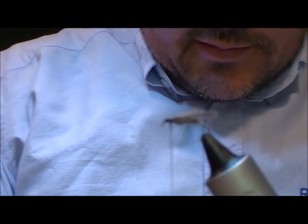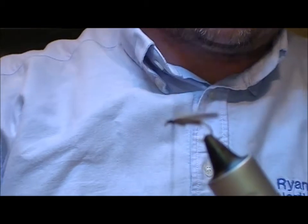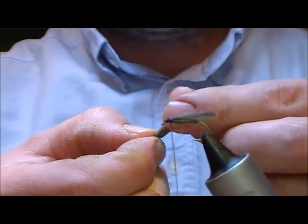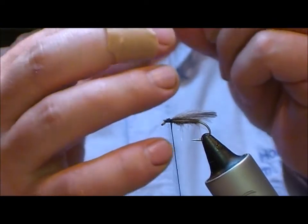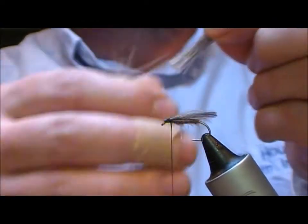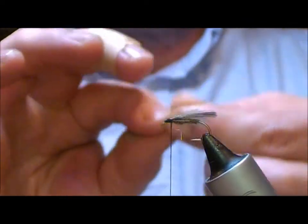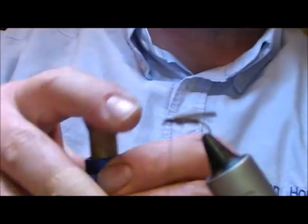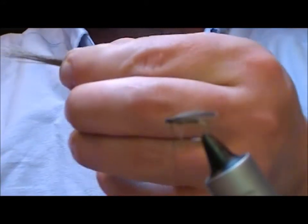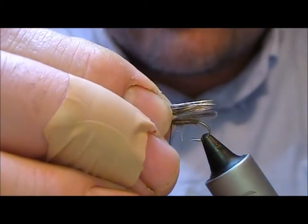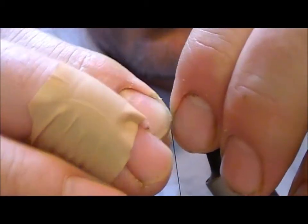Now the rest of this wing is a little bit of elk, so I'm cutting off a bunch of elk there. And then if I flick the base of it, I should get the under fur out of it. I'm going to put that into a hair stacker and just stack it to get the tips together, and I'll set that on to be just about the length of the CDC, maybe a little bit further.